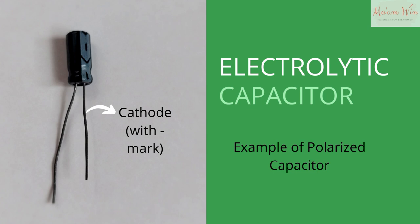This type of capacitor uses an electrolyte to operate, with a higher or more positive voltage on the anode than the cathode. The anode terminal is denoted with a positive sign, while the cathode is denoted with a negative sign.